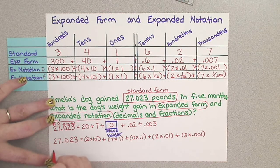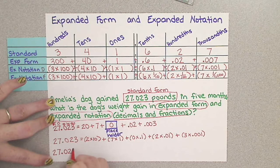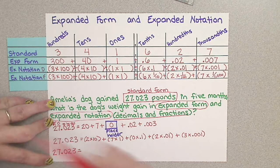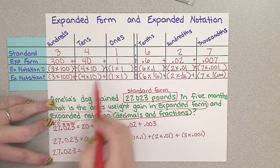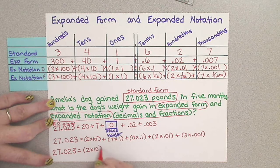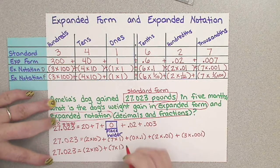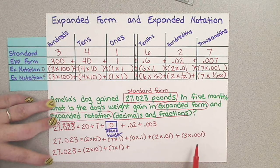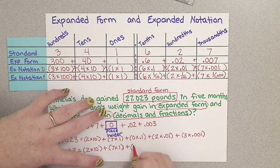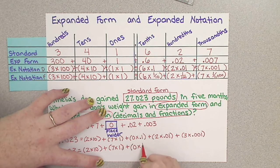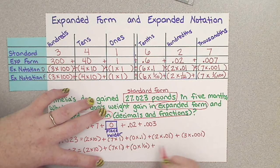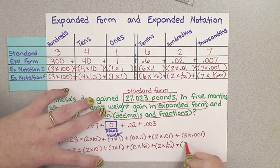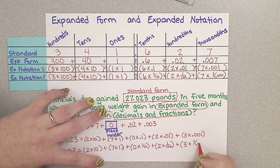Now we need to do it with fractions. 27 and 23 thousandths. And remember, just like when we looked up here, our whole numbers, the ones to the left of the decimal, are going to be exactly the same. So we can just copy this down: 2 times 10 plus 7 times 1. Now we're getting into where we had decimals before, and now we need to change this to fractions. I have 0 tenths, so I'm multiplying 0 times 1 tenth, plus 2 times 1 hundredth, plus 3 times 1 thousandth.